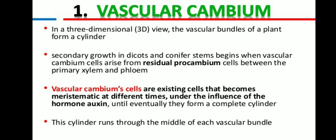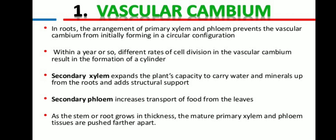Cork cambium produces new dermal tissue which eventually replaces the epidermis formed by the protoderm. In a three-dimensional view, the vascular bundles of a plant form a cylindrical shape. Secondary growth in dicots and some gymnospermic conifers begins when vascular cambium cells arise from the residual procambium cells between the primary xylem and phloem. These vascular cambium cells become meristematic under the influence of the hormone auxin, eventually forming a complete cylinder. In the roots, the arrangement of primary xylem and phloem prevents the vascular cambium from initially forming in a circular configuration, but within a year or so, different rates of cell division result in the formation of cylinders.